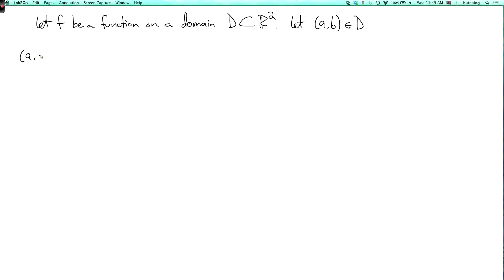So we say that (a,b) is a global maximum, or just a maximum, of f if f(a,b) is greater than or equal to f(x,y) for all (x,y) in the domain.